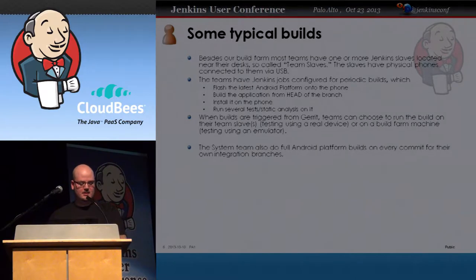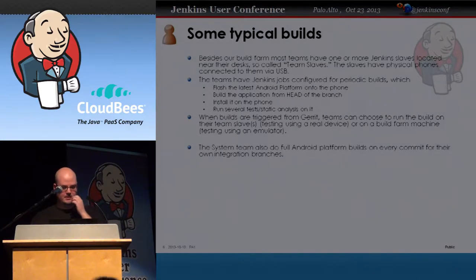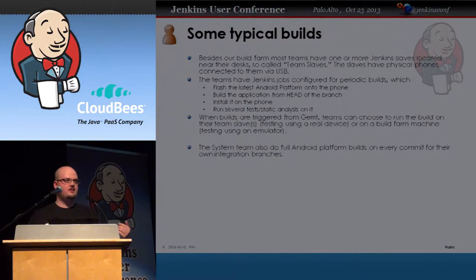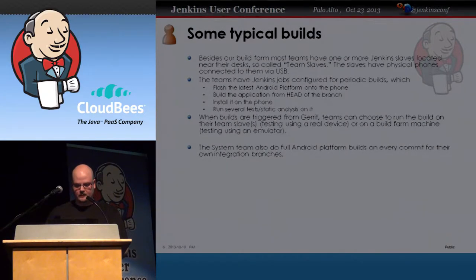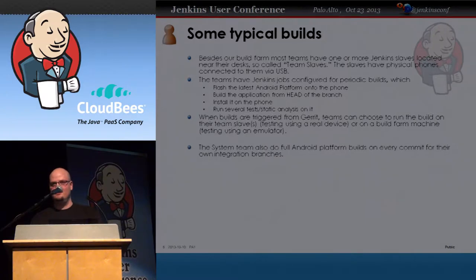For each cluster of integration branches, there is one team responsible for the overall system — we can call them release engineers. They provide builds triggered for each change in the Android platform, just to verify that an actual build can be done on that change. Those run on specialized hardware with SSD disks, using a build cache, so instead of a one-hour build, we might have a 15-minute build instead.